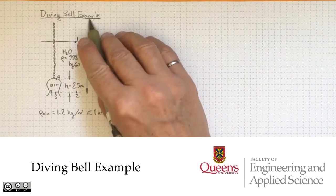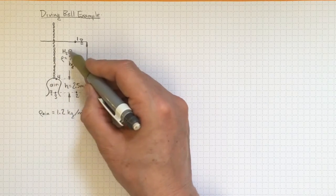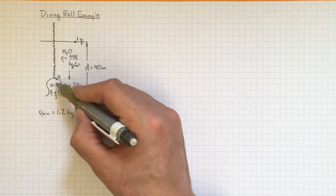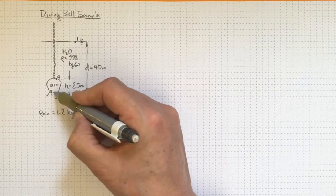Let's look at an example with a diving bell. This diving bell is a heavy shell underwater filled with air at a high enough pressure to hold the water level down here at location 3.